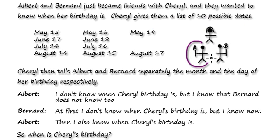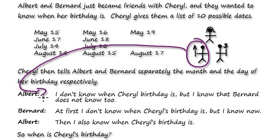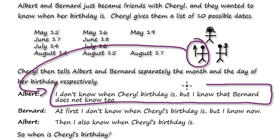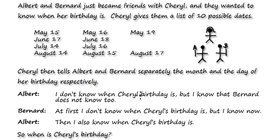Then Albert says: "I don't know when Cheryl's birthday is, but I know that Barnard doesn't know either."